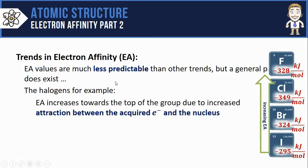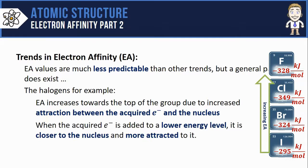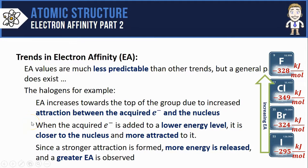We can summarize this by saying that electron affinity increases towards the top of the group due to increased attraction between the acquired electrons and the nucleus. When the acquired electron is added to a lower energy level it is closer to that nucleus and therefore more attracted to it. Since a stronger attraction is formed more energy is released and a greater electron affinity is observed.